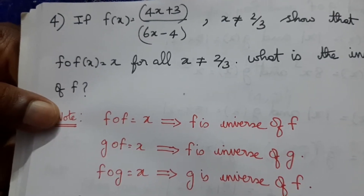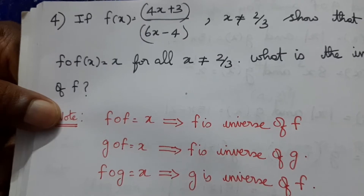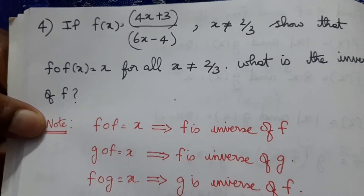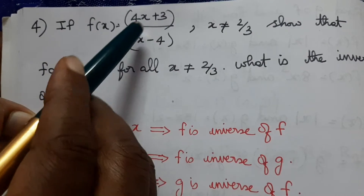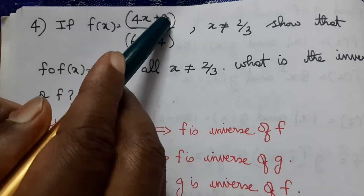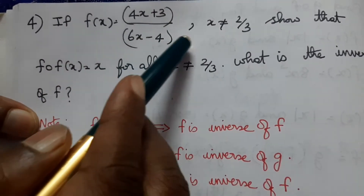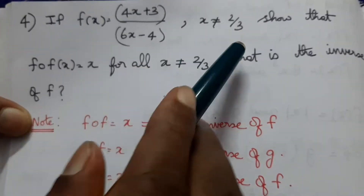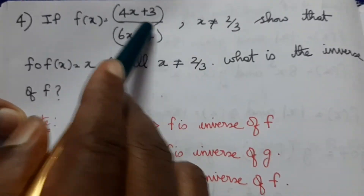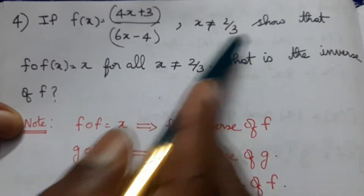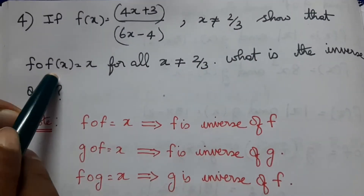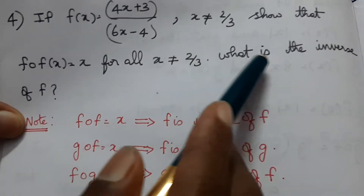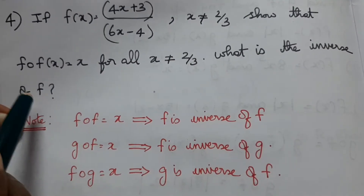Welcome to Max Very Easy. Chapter 1: if f of x equals 4x plus 3 divided by 6x minus 4, where x is not equal to 2 by 3, show that f of f of x equals x for all x not equal to 2 by 3. What is the inverse of f?